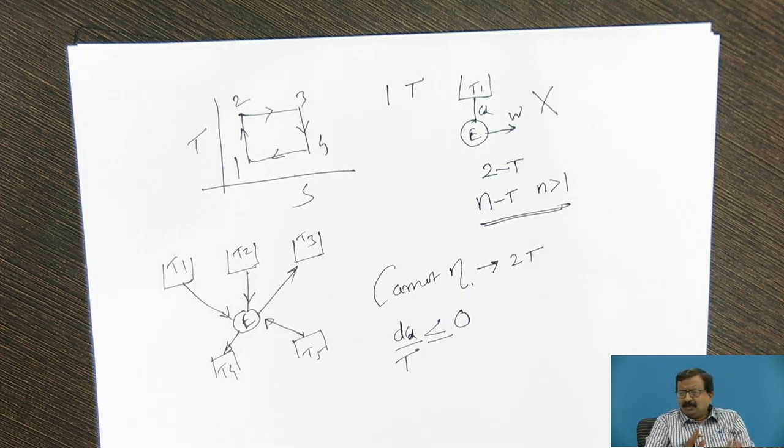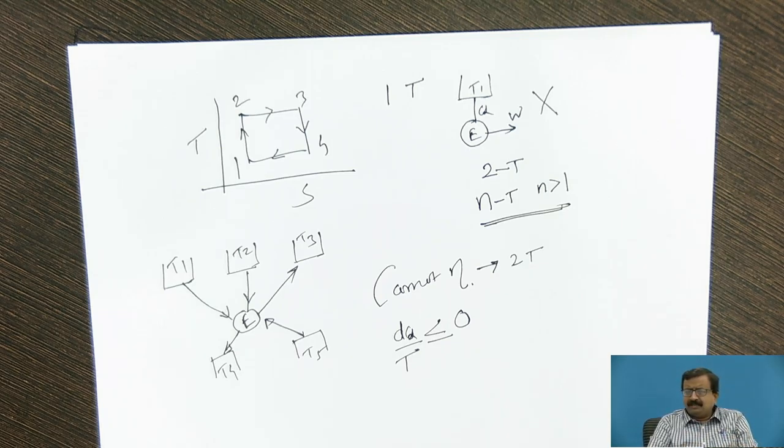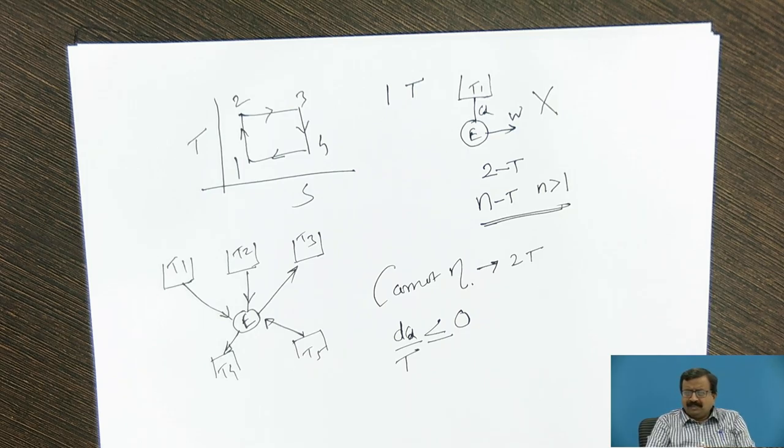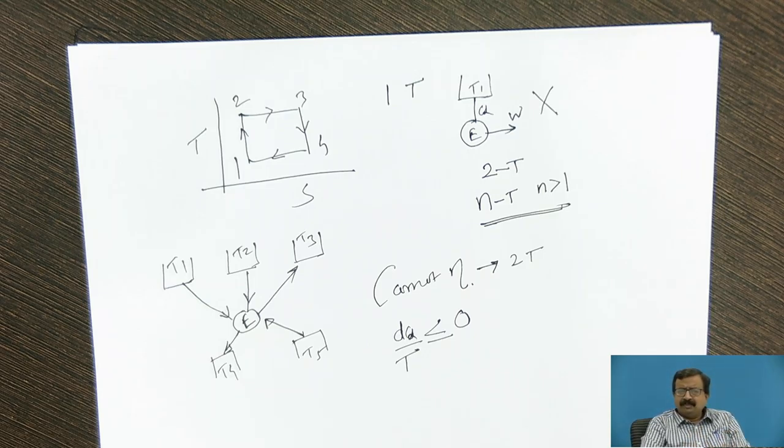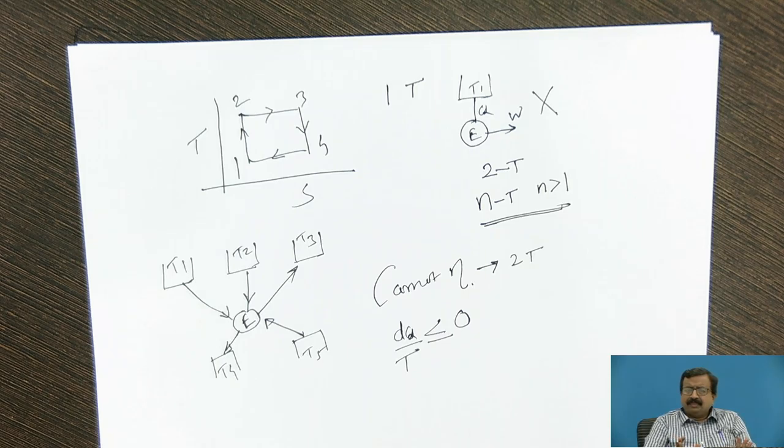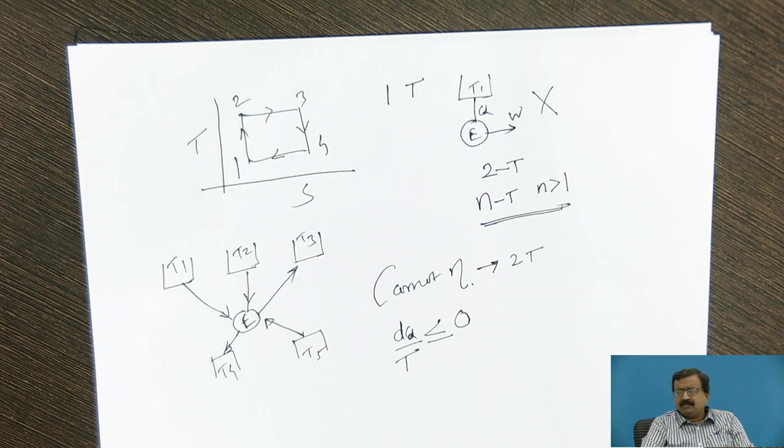Now dQ by T, if the process is reversible, we call this as entropy. Don't make a confusion regarding the concept of entropy S and dQ by T. One thing is clear, as long as heat transfer is taking place at reversible condition, the dQ by T becomes entropy. Otherwise, it is not. So if my process is reversible, I can say that dQ by T is entropy, and integral dQ by T is less than or equal to 0.